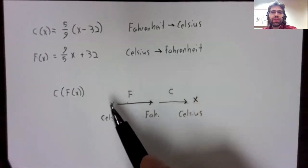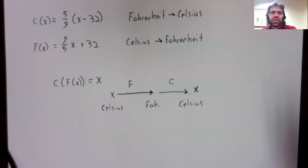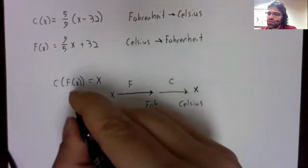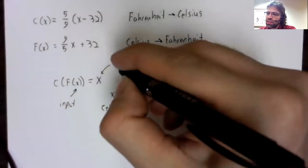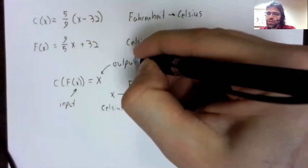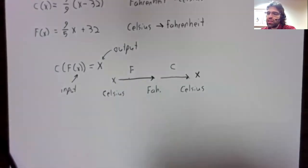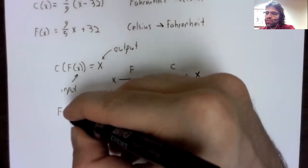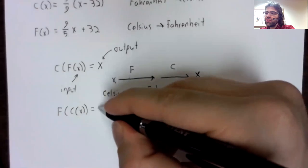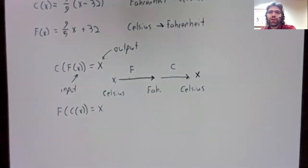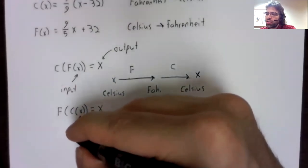So what happens? We started with x, a temperature in degrees Celsius. We converted it to Fahrenheit, then we converted it back again. The change from this process is nil. We convert it, we convert it back, we end up exactly where we started. This composition c of f of x equals x. This x is the input of the composition. This x is the output, and the input and the output are the same.